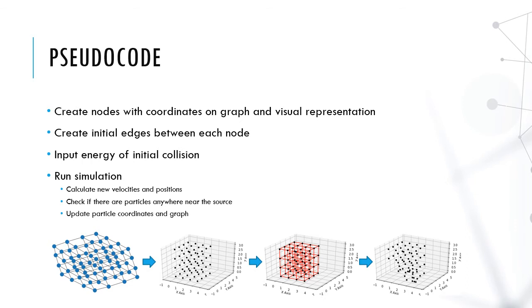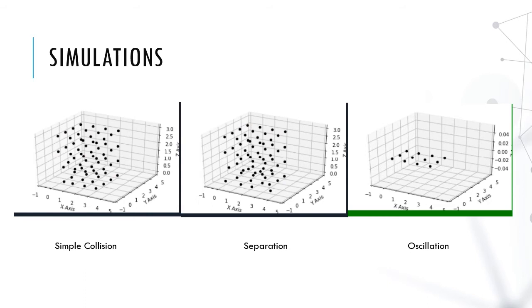The simulation actually works quite simply. First, it generates the graph, and each node is assigned a coordinate. Then, the edges are also encoded using the first two fundamental equations. Afterward, the program asks the user to select a particle and input the initial energy of a collision. Then, the simulation runs for about 20 times. For each node in the graph, it checks if there are positions or velocities that are changing anywhere near it. If there is, it uses the equations to generate new positions and velocities. The image is updated, and it repeats.